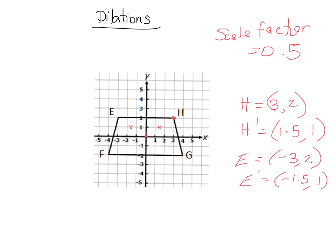And again we do the same thing for G. G is currently at 4 comma negative 2. So the new G will be at half of 4 is 2, half of negative 2 is negative 1. So it will be at 2 comma negative 1. And then we do the same thing over for F. And we get that it should be at negative 2 negative 1. And so our new figure, our new image will look like this.